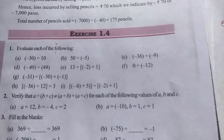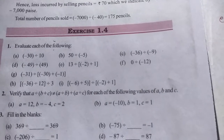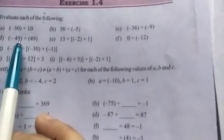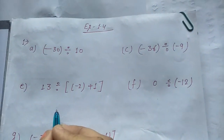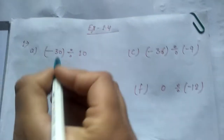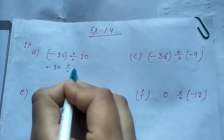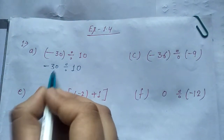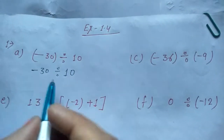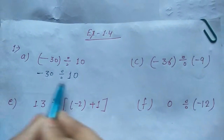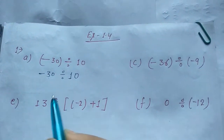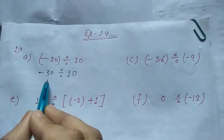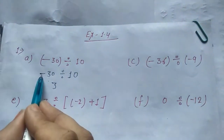Now we start Exercise 1.4. First question: evaluate each of the following. Ab aapko inko solve karna hai — sab division ke questions hain. First question: minus 30 divided by 10. Pehle agar aapko problem hai, toh pehle aap inko whole number ki tarah divide kariye. 30 divided by 10 is 3 times.